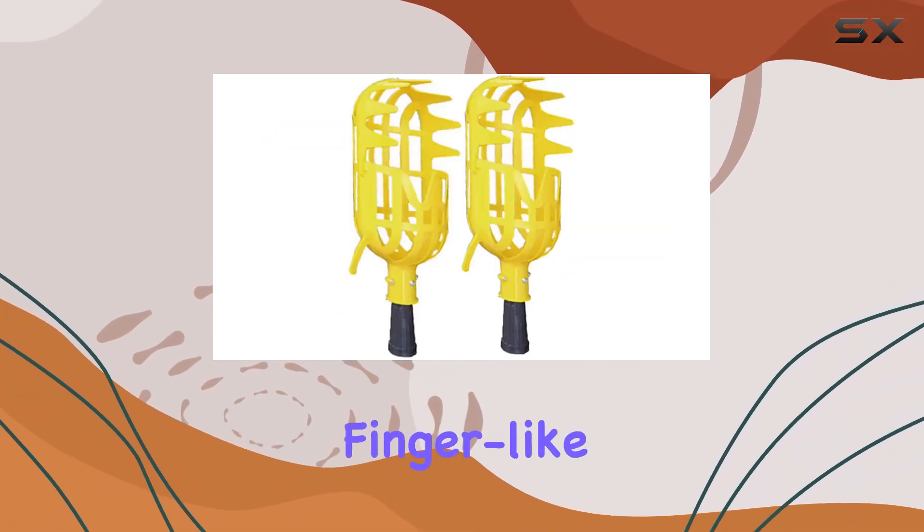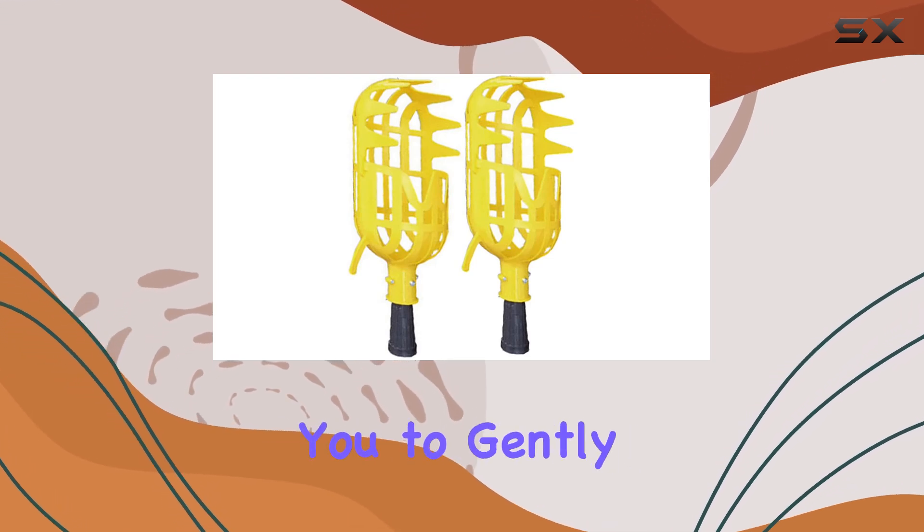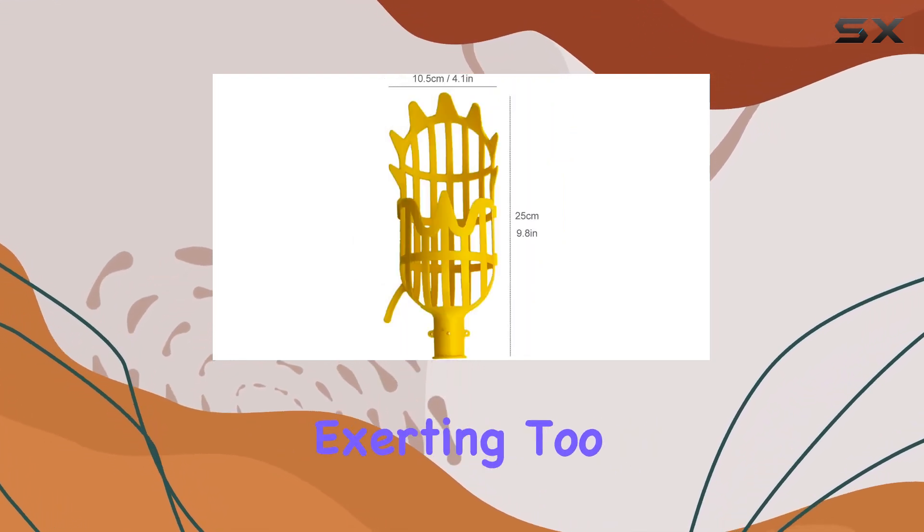The design features finger-like prongs that delicately grasp fruit, allowing you to gently pull them off branches without exerting too much effort.